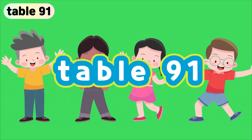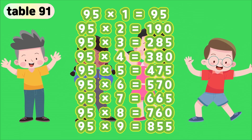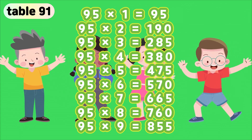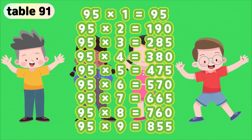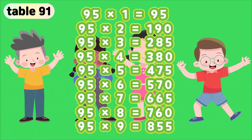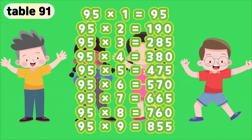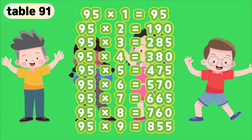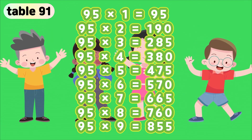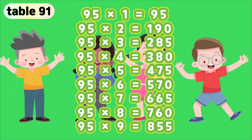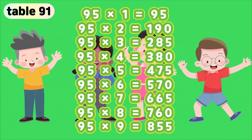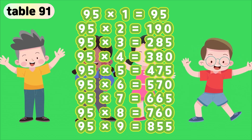Table 95. 95 times 1 is 95. 95 times 2 is 190. 95 times 3 is 285. 95 times 4 is 380. 95 times 5 is 475. 95 times 6 is 570. 95 times 7 is 665. 95 times 8 is 760. 95 times 9 is 855.